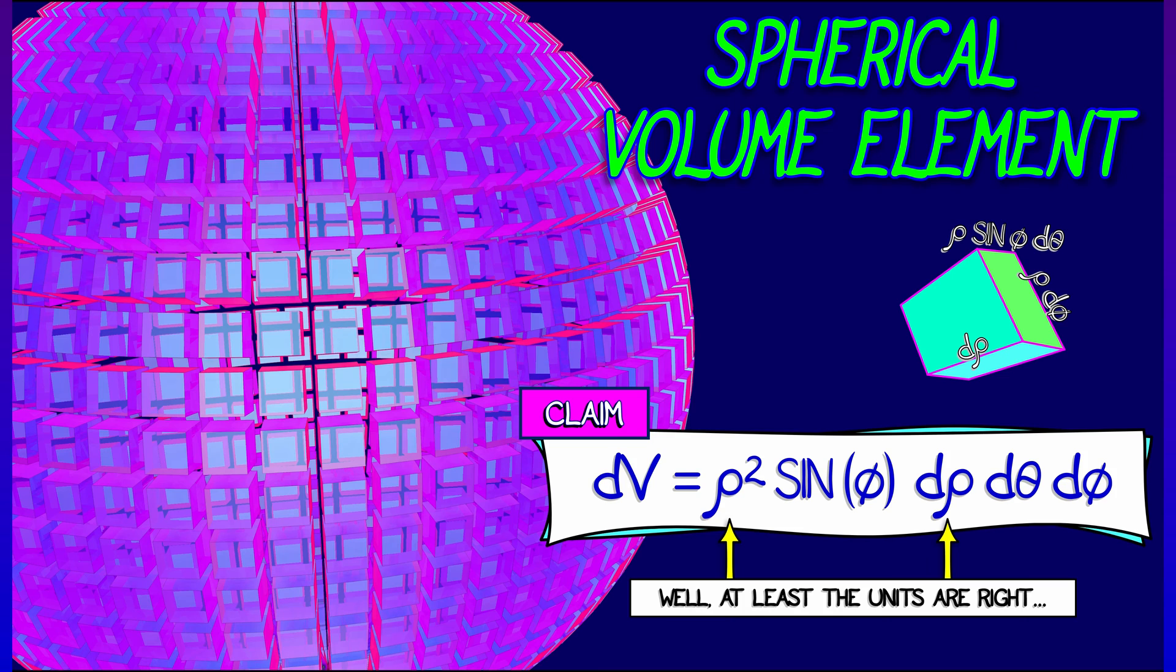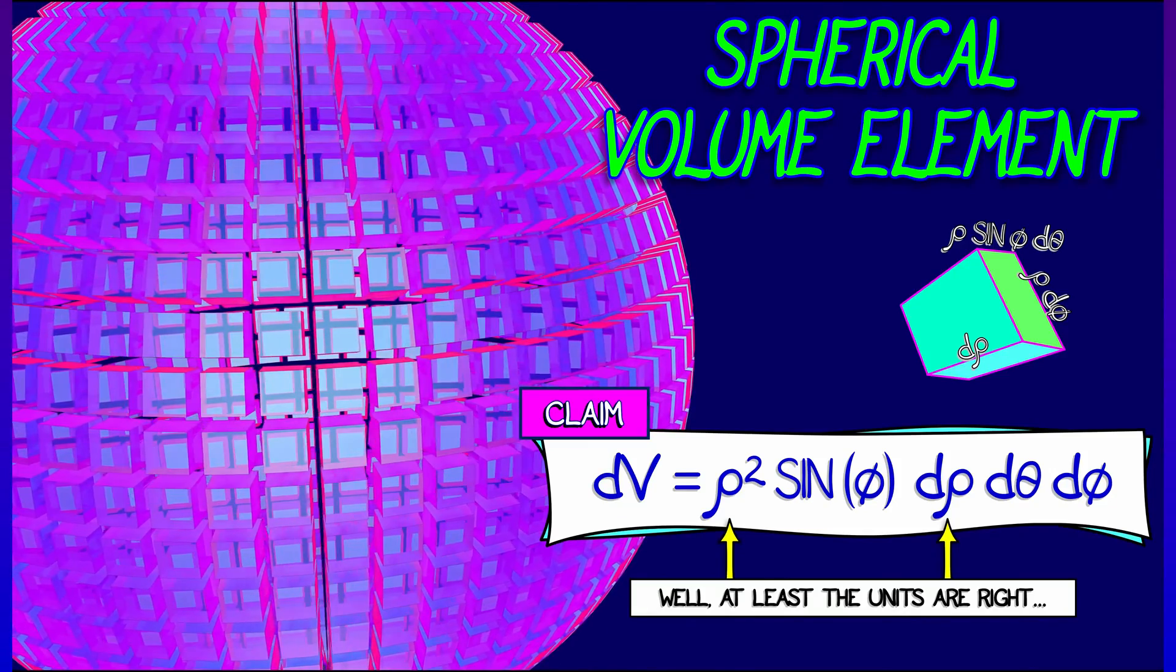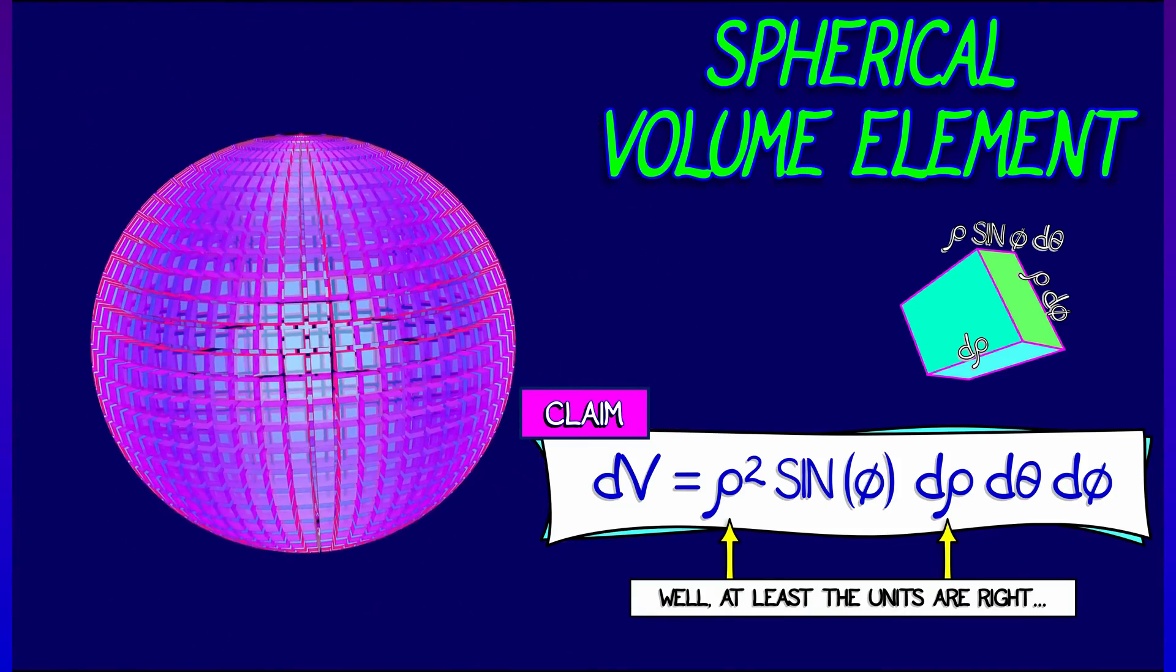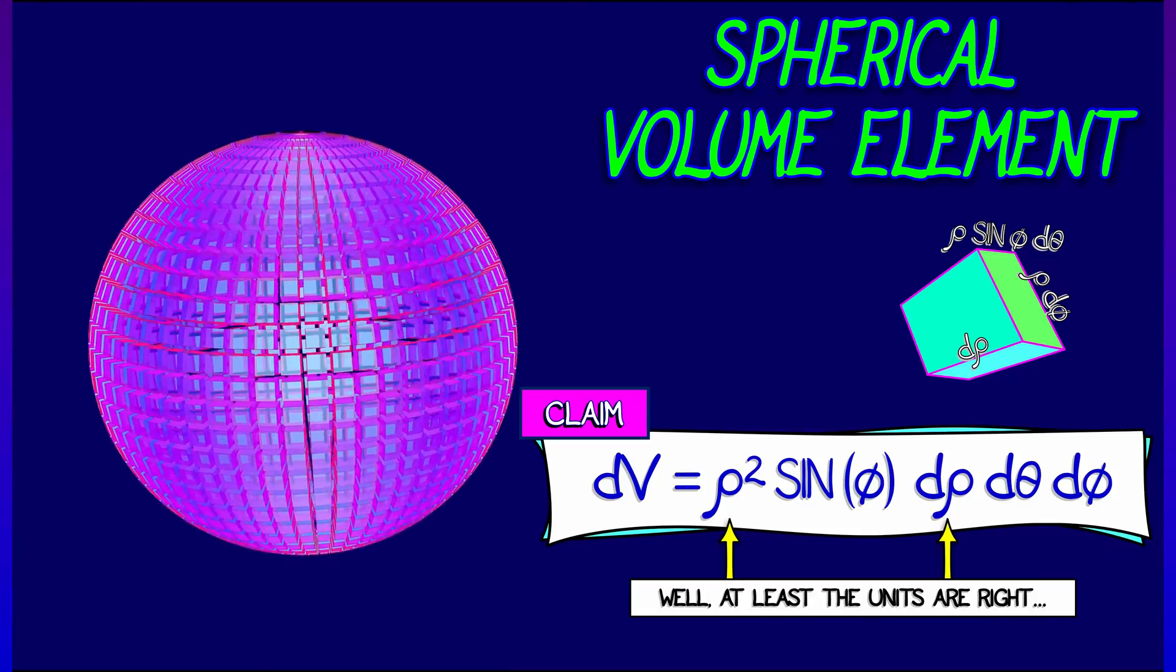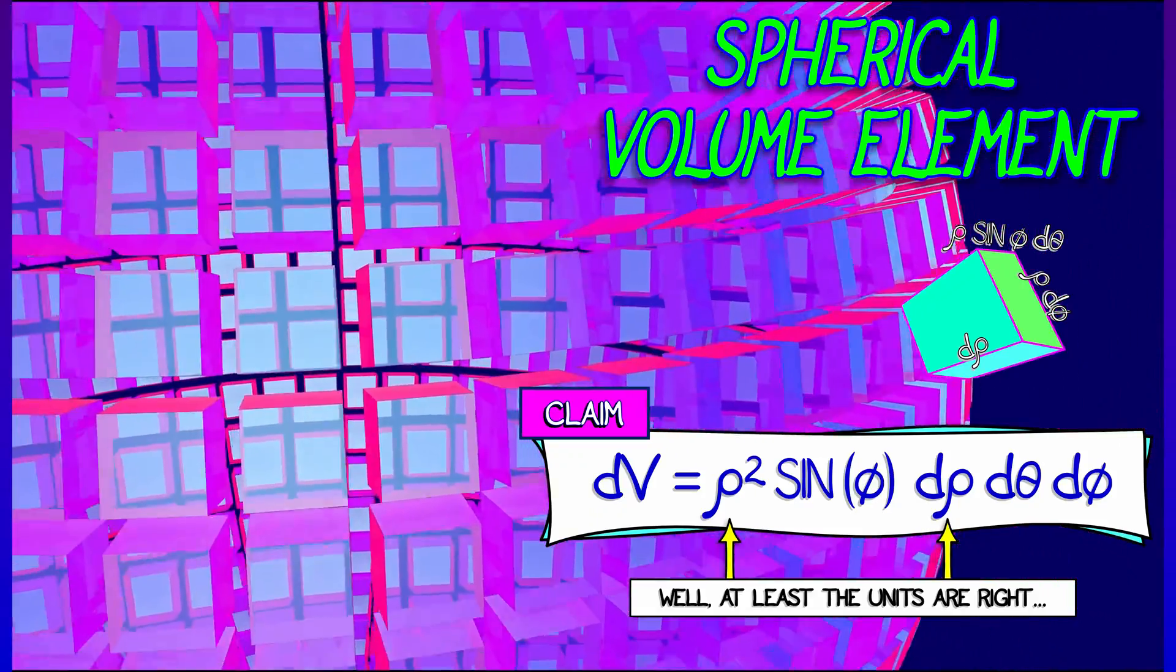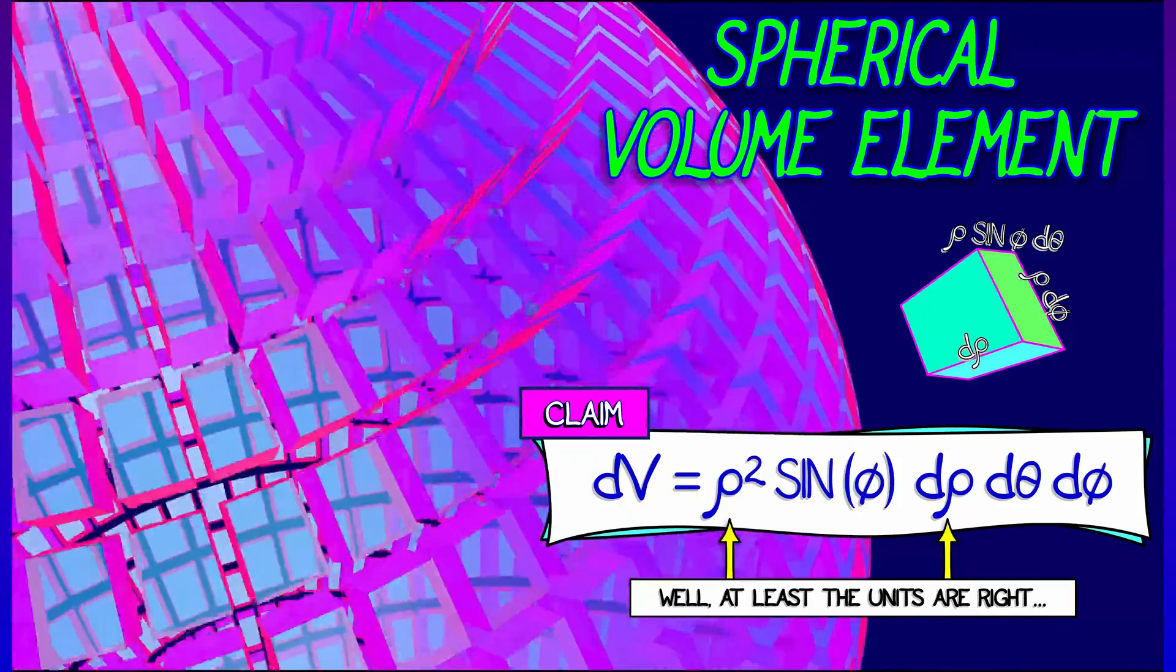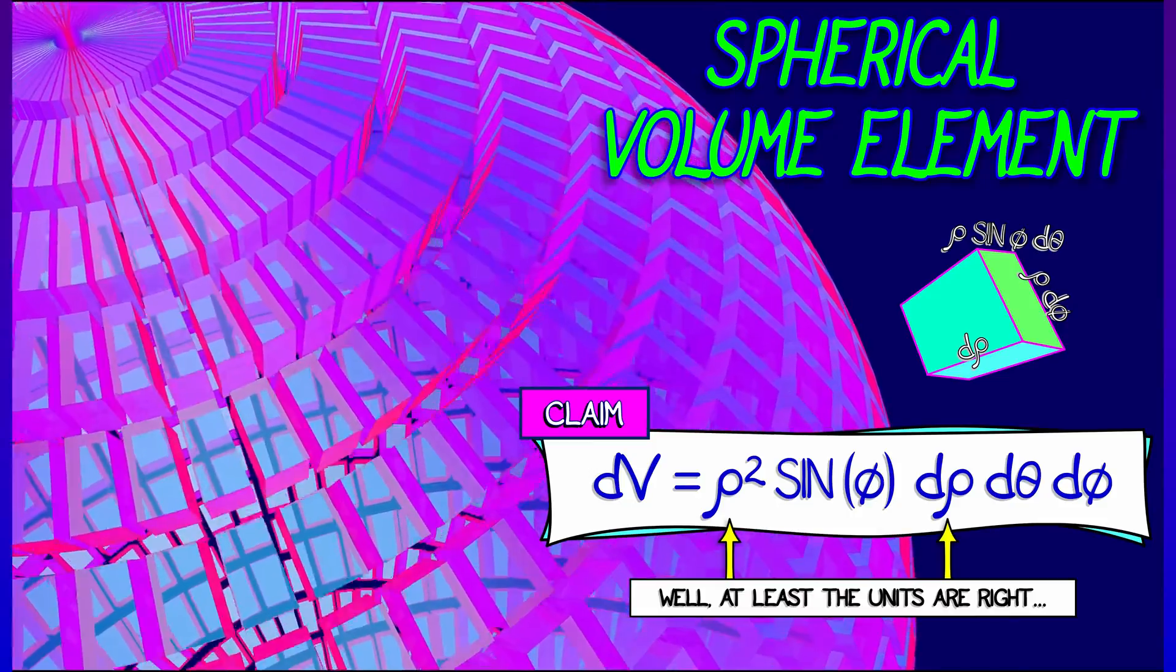So then maybe somebody will draw the pictures of the volume forms or even animate them. And you can see what happens as ρ changes, how the size of the volume elements grows quadratically. You can see what happens as you change φ, as you move up towards the north pole, and these volume elements shrink.